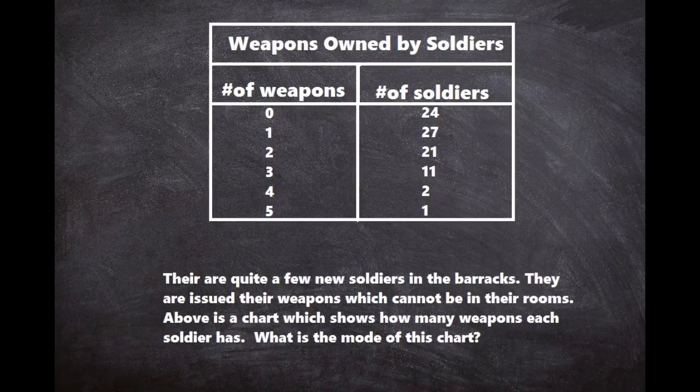There are quite a few new soldiers in the barracks. They are issued their weapons, which cannot be in their rooms. Above is a chart which shows how many weapons each soldier has. What is the mode of this chart? Let me give you a few seconds to try to answer it on your own.